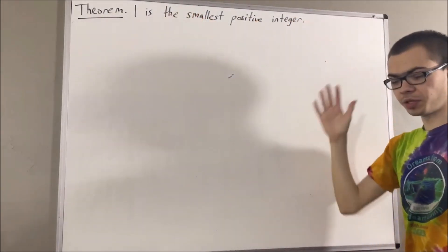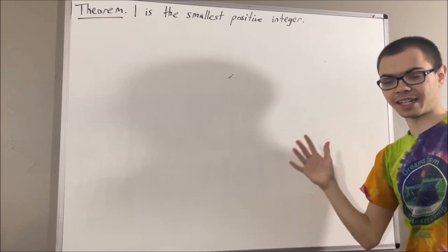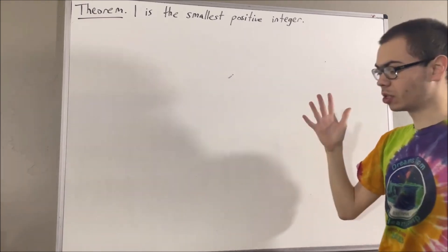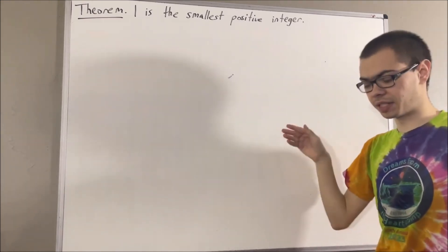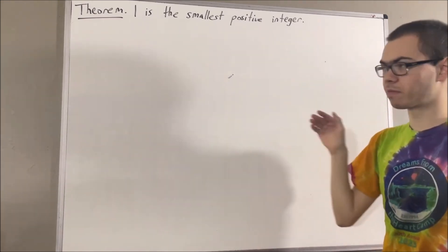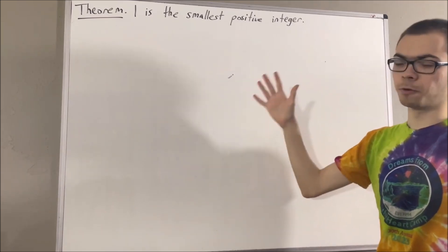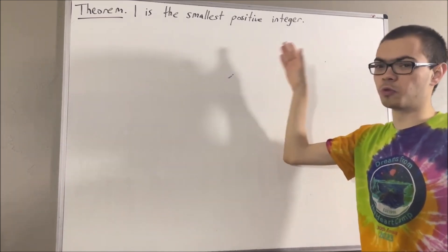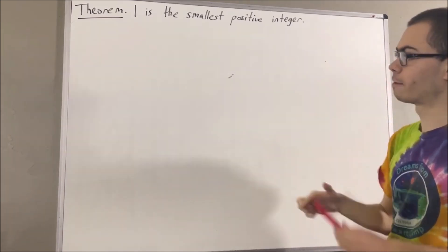In this series we are using a list of 10 axioms for the real number system, and I'll leave that list of axioms in the description below. In this video we are going to be using axioms 1, 2, 4, and 5.